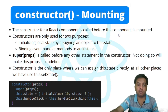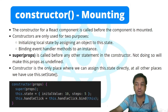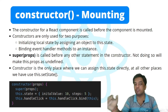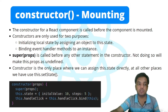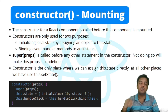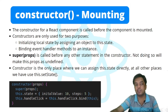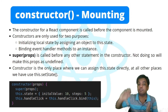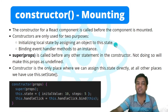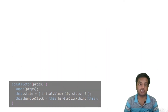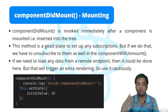Since lifecycle methods are only defined for class components, the constructor here is the class constructor. super(props) must be called before any other statement in the constructor — not doing so will make this.props undefined, meaning we won't be able to use props. The constructor is the only place where we can assign this.state directly. At all other places, we must use this.setState() to update the state.